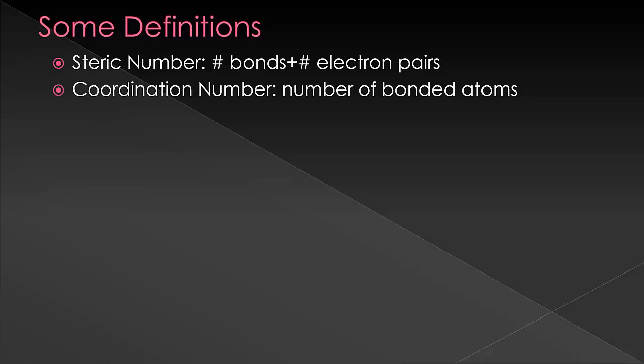So the next thing then is coordination number. Coordination number, on the other hand, only counts the number of bonded atoms. So again, single, double, and triple bonds, they all count the same. It's how many atoms are bonded to that middle atom. Okay, let's do an example, and then I'm going to point out a couple of things.